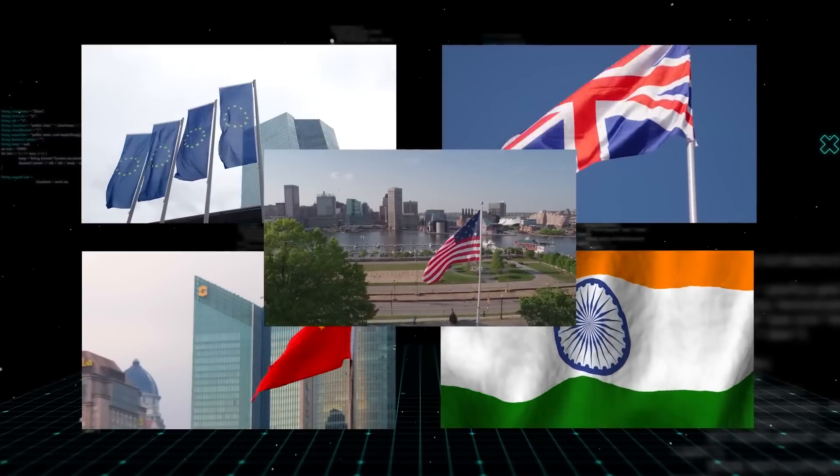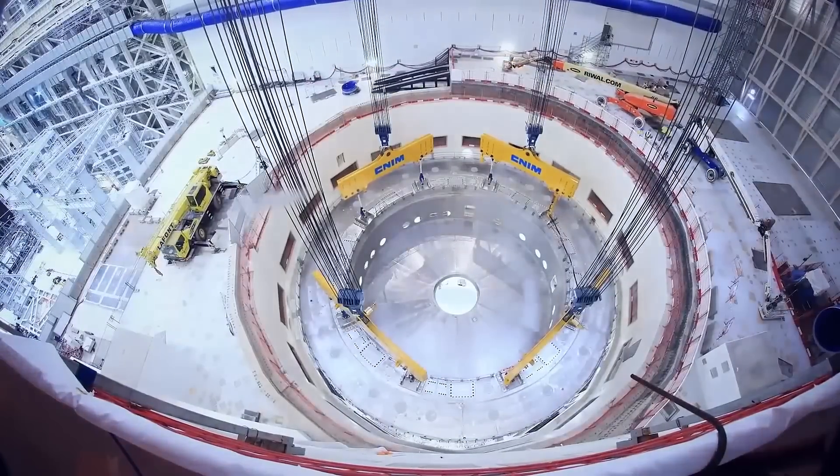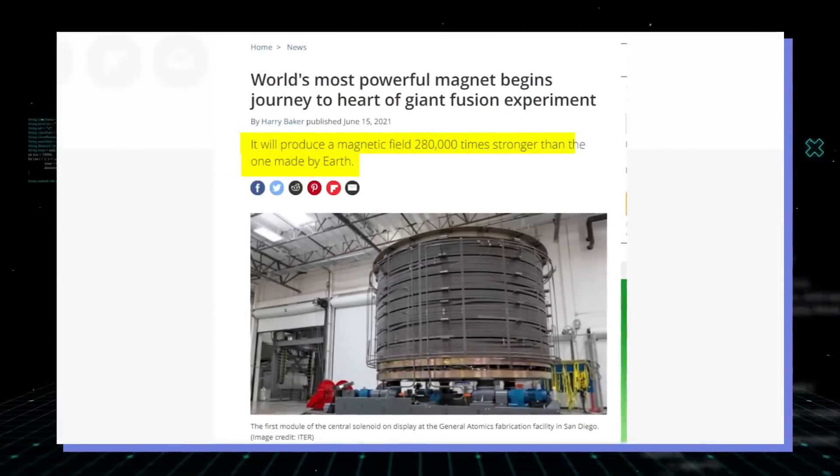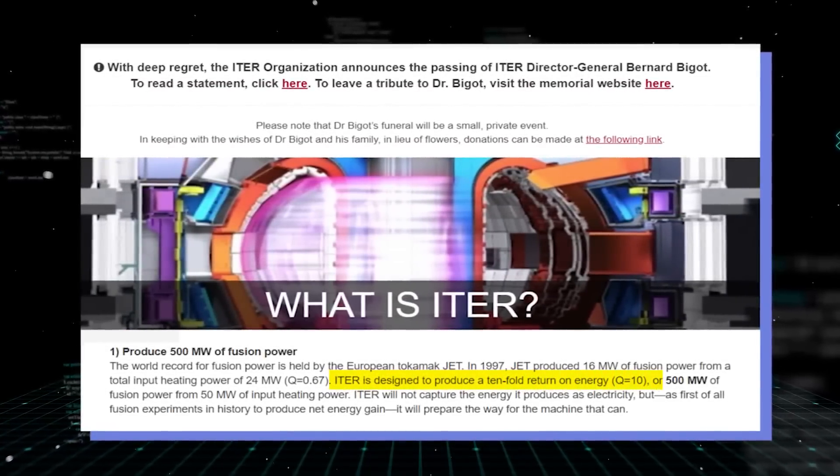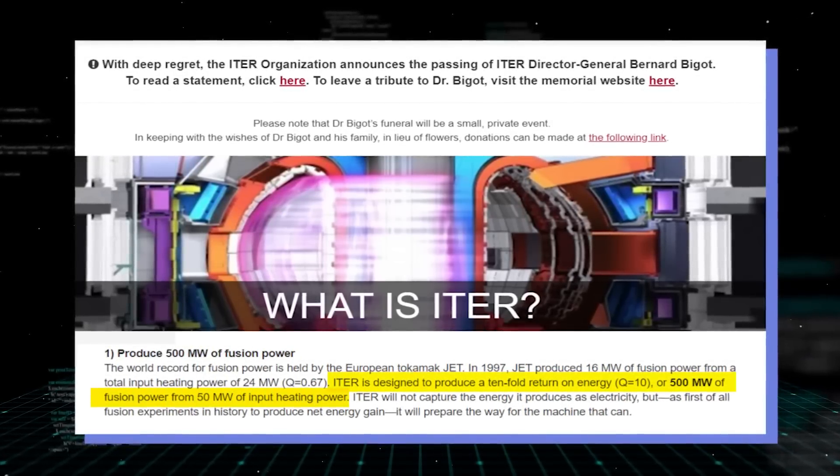Thanks to the lessons learned during EAST's development, the ITER contains the world's most powerful magnet, making it capable of producing a magnetic field 280,000 times as strong as the one around the Earth. ITER designers claim that putting 50 megawatts of energy into the system to start the reactor will produce 500 megawatts.